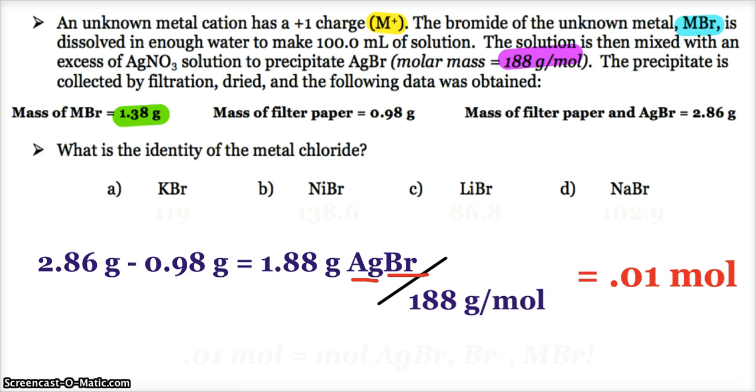And that's potentially helpful, because where did all those bromides come from? They came from the MBr, the metal bromide. So, since that is also a one-to-one mole ratio, ultimately, that 0.01 moles is very helpful. That tells me I have 0.01 moles of the silver bromide, bromide, and the metal bromide.